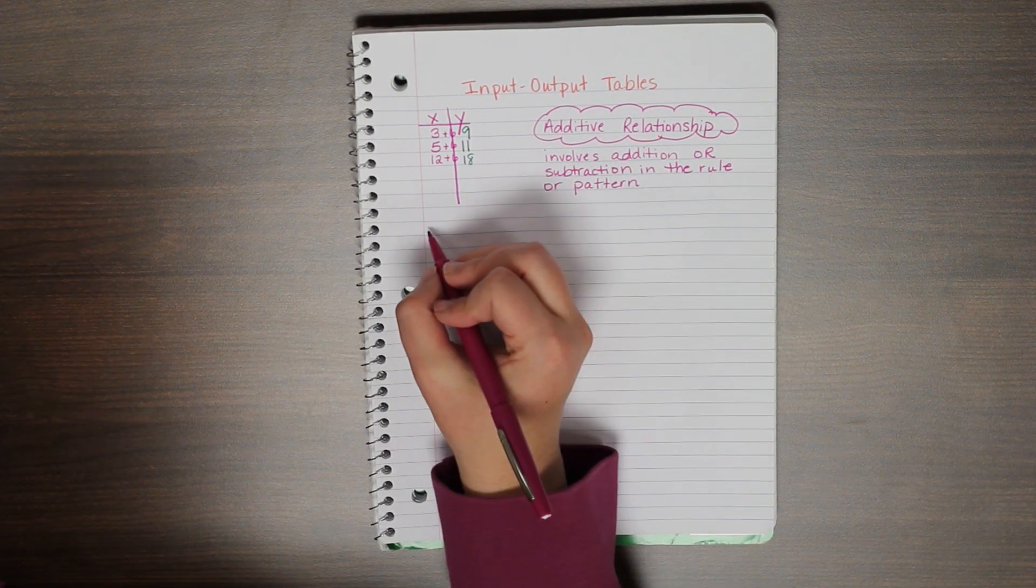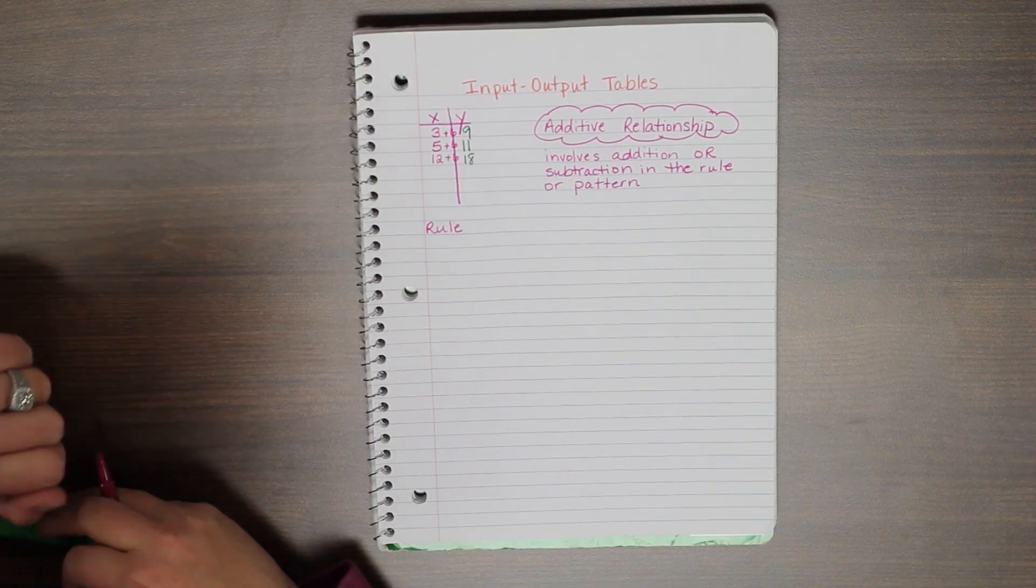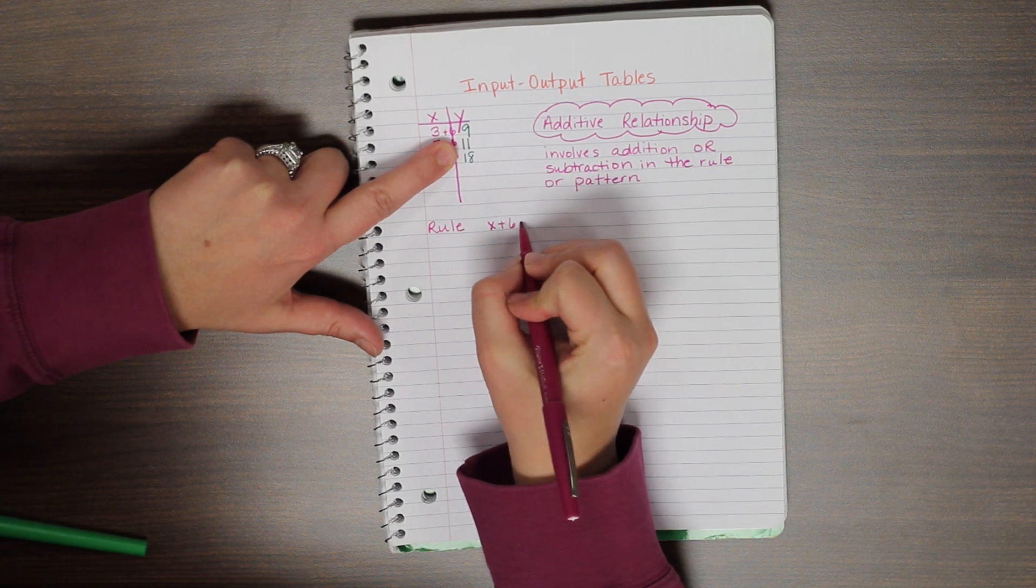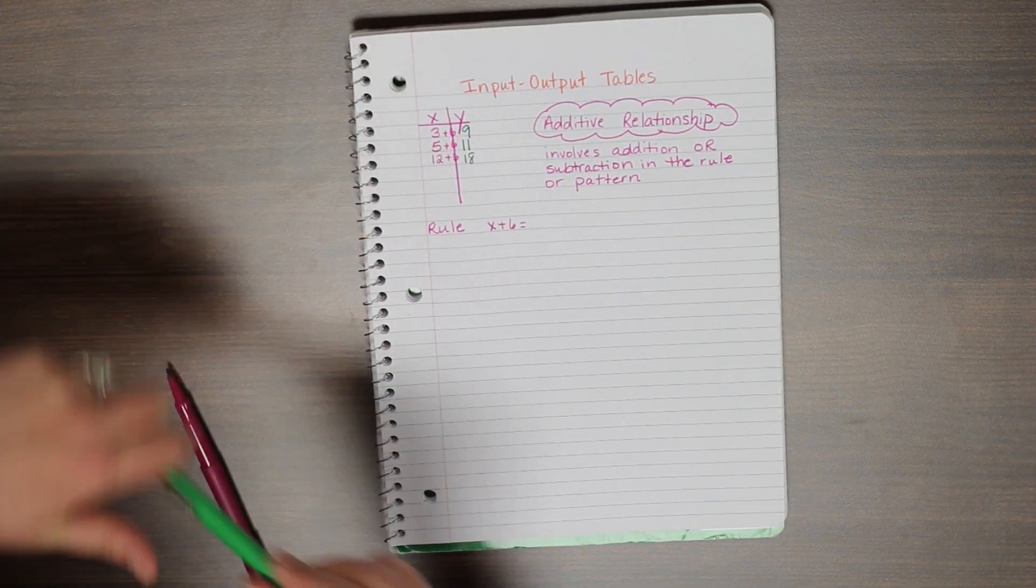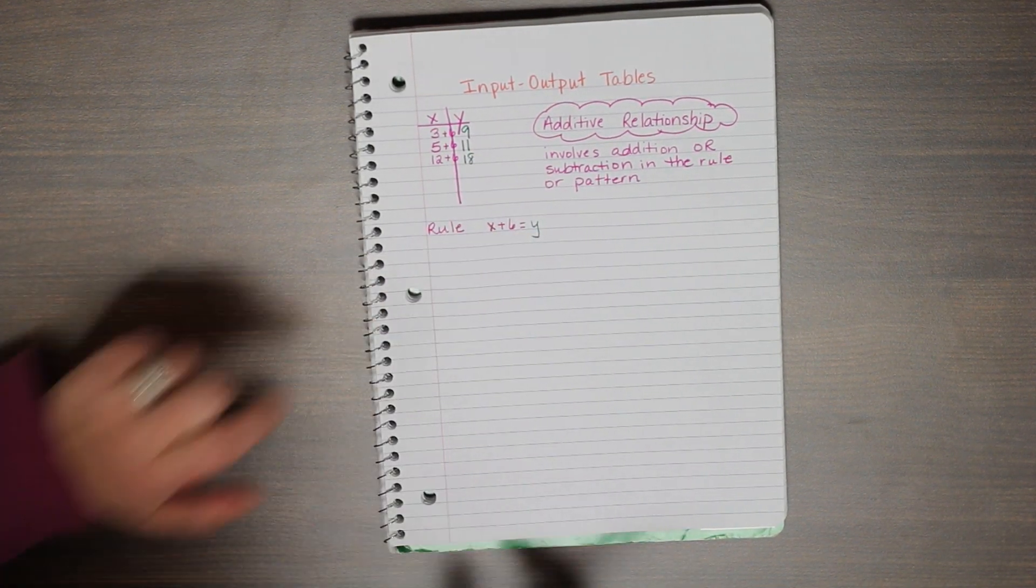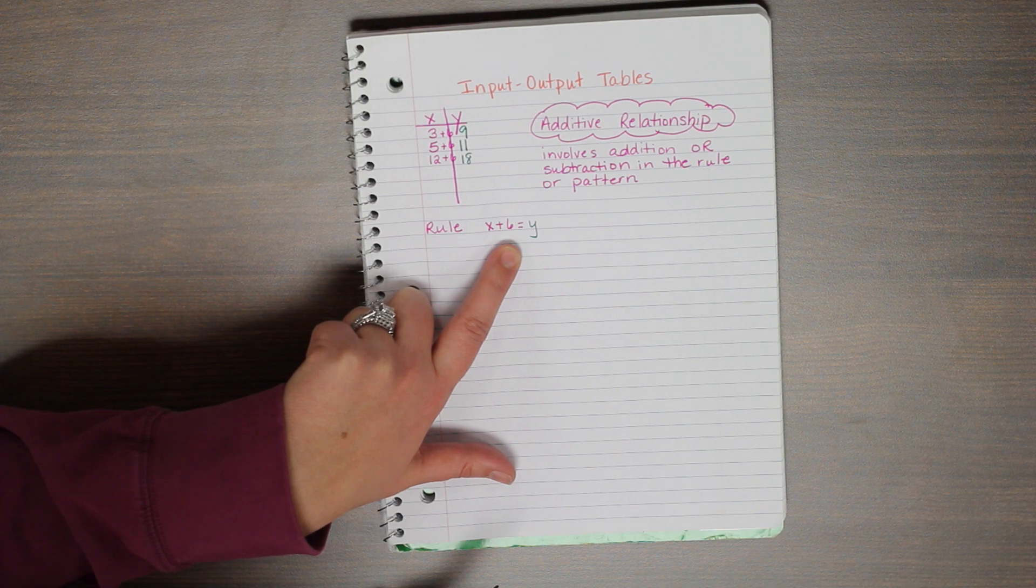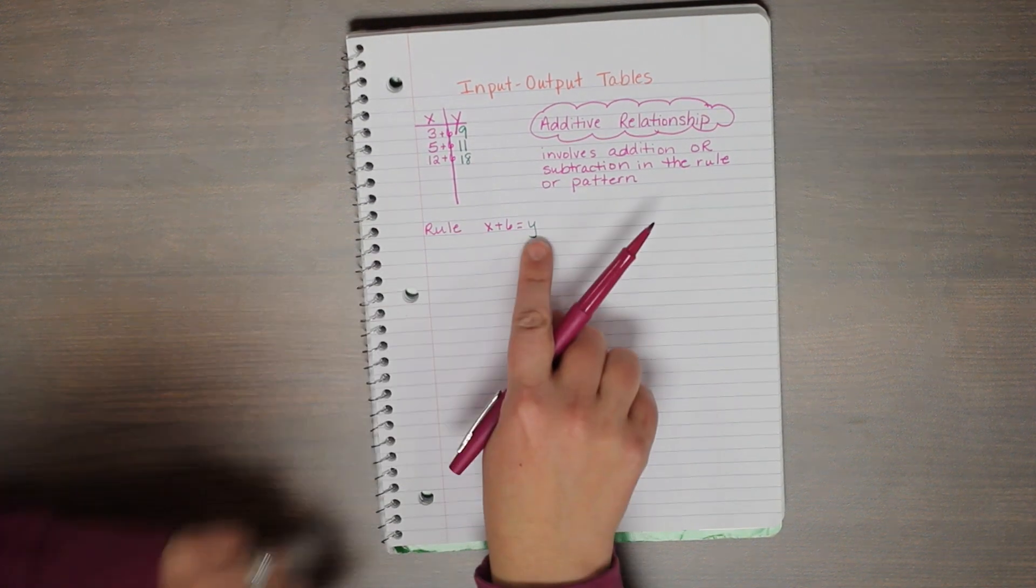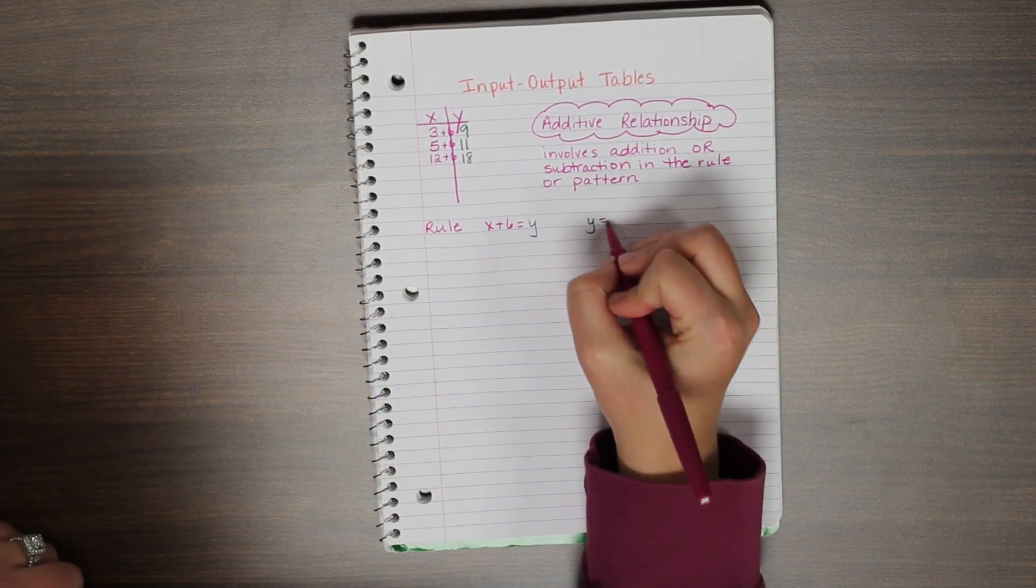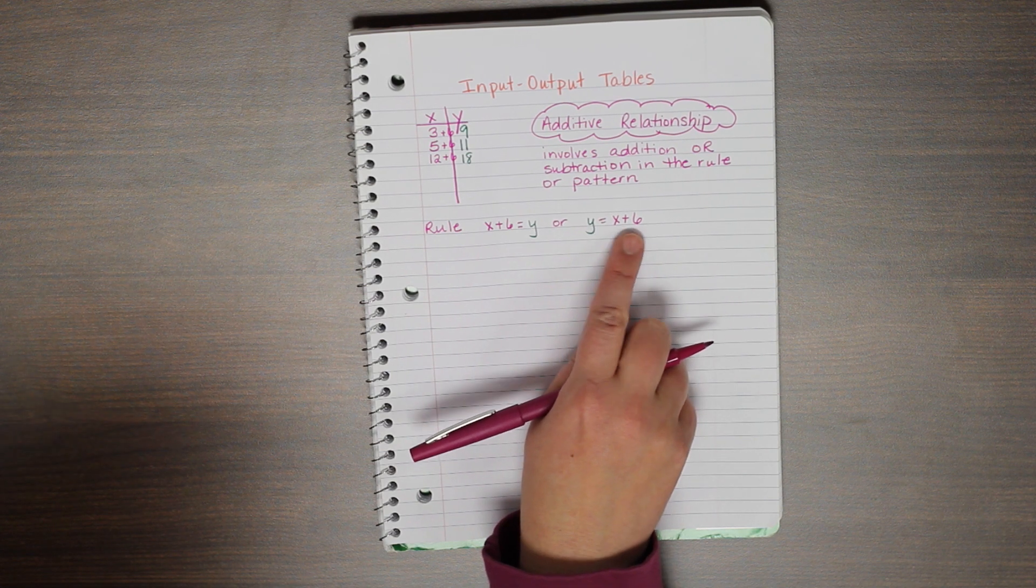Now, how we want to see that rule written is we want to think about what am I doing to x to equal y? Well, I am taking x and I am adding 6 to equal y, which is 9. I want to use the x and the y because my x and my y change. My plus 6, my relationship or rule, is what is not changing. I can also switch this around where I could say that y equals x plus 6. And you may see it written either way. Most commonly is with y equals x plus 6.